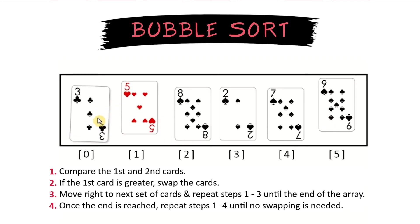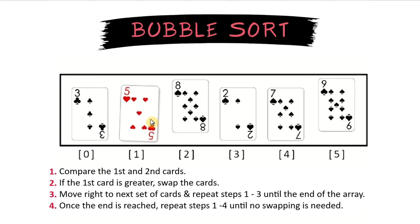We repeat this process with the 3 and the 5. 3 is less than 5, so no swap is needed. 5 and 8, same thing. It's less than 8, so no swap is needed.